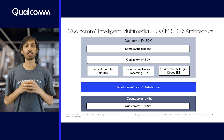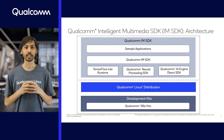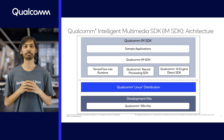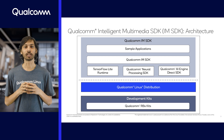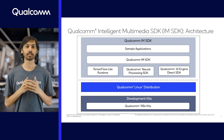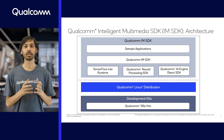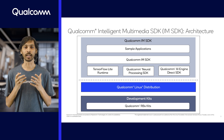The Qualcomm IM SDK is a unified environment for developing AI and multimedia applications at the edge on the Qualcomm Linux platforms. The SDK is based on GStreamer, which is an open-source multimedia framework. GStreamer provides a modular, scalable, and customizable environment to develop intelligent multimedia applications.